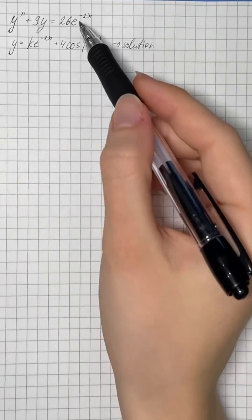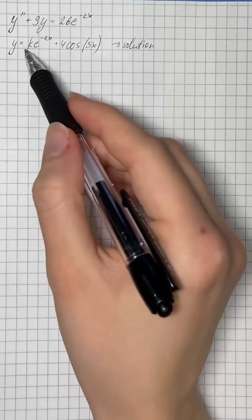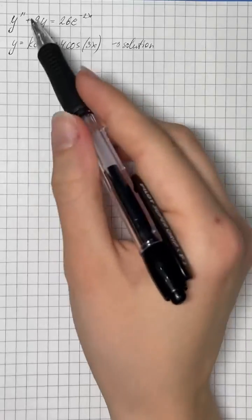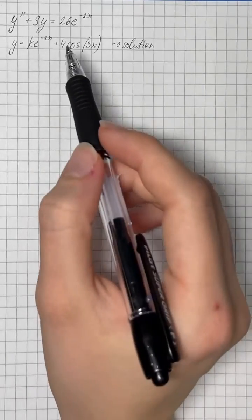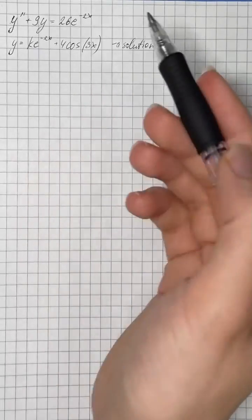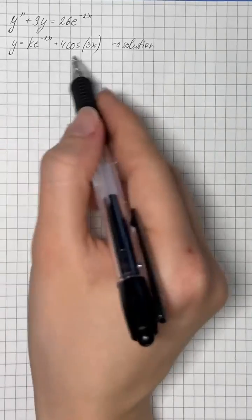We are given a second order linear differential equation and the solution of this differential equation. So we need to find k and first we're going to differentiate it.